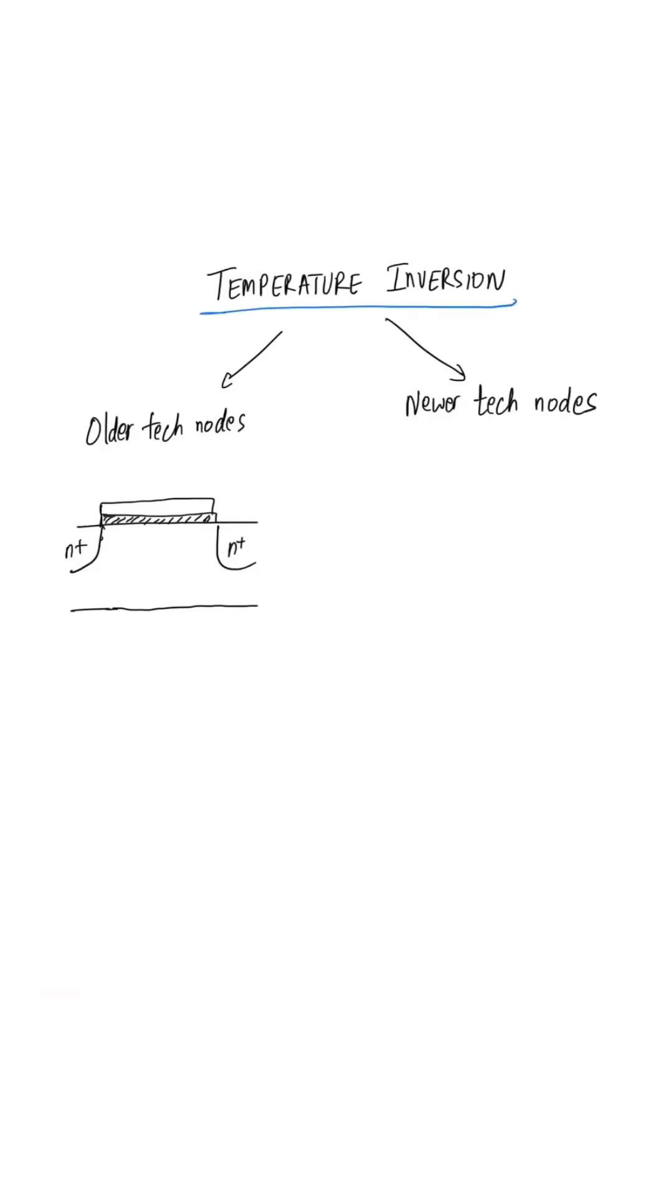Temperature inversion is an important concept to understand the impact of temperature on cell delays in our design. On older technology nodes, with an increase in temperature, we saw that the delay of the transistors also increased.